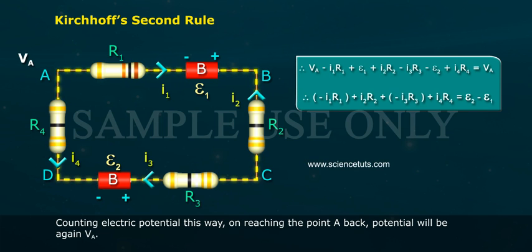Therefore, minus I1 R1 plus I2 R2 plus I3 R3 plus I4 R4 equals Epsilon 2 minus Epsilon 1.